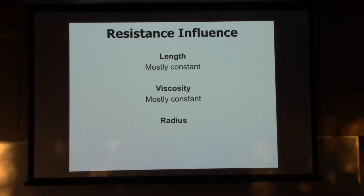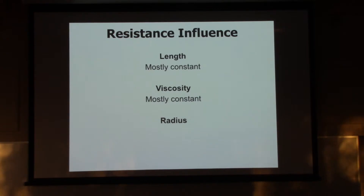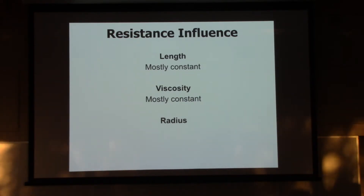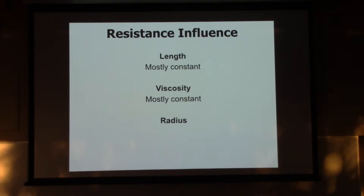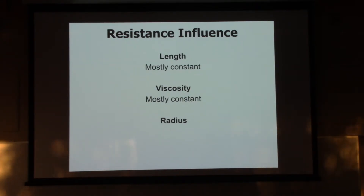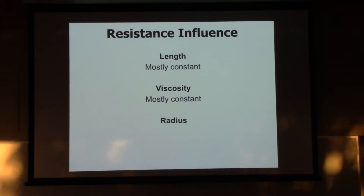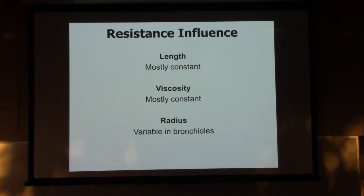The bronchioles do change in response to whatever's in the air. Smog can cause them to constrict. If you've got an asthma attack - an inappropriate immune response to something in the air - that can cause those bronchioles to get tighter and make it harder to get air in and out. The resistance to flow goes way up. So it is variable in the bronchioles.